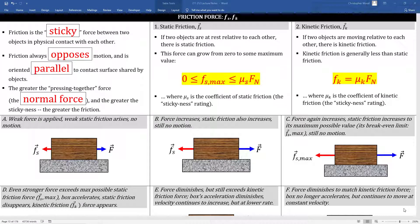Here's an entire page dedicated to friction, specifically static friction and kinetic friction. Friction is the sticky force between two objects in physical contact with each other. Friction always opposes motion and is oriented parallel to the contact surface shared by the two objects. That's useful to remember when it comes time to drawing the direction of your friction force vector. The greater the pressing together force, which is the normal force, the greater the stickiness, and the greater the friction. Box number one. Of the two types of friction, static friction is the trickiest. If two objects are at rest relative to each other, there's static friction. Here's the tricky thing about static friction. It can grow from zero to some maximum value. It's scalable. So this expression says the maximum static friction force is greater than or equal to zero, but less than or equal to some maximum value, which is given by mu sub s times the normal force. This is Greek letter mu, subscript s for static. Mu sub s is the coefficient of static friction. It's a material property. So for example, a concrete surface is a lot stickier than a glass surface.